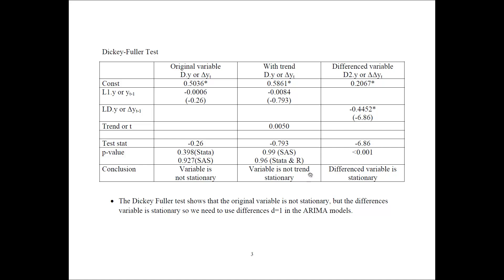Now we can look at the difference variable — this is delta delta Y_t, or d2 of Y, because it is differenced twice. We look at the coefficient on the lag variable; because we are dealing with the difference variable, that one also has to be differenced, so this is now delta Y_(t-1). We see a coefficient of minus 0.44, and the test statistic is minus 6.86. The p-value is very small — therefore we have the difference variable stationary. When we have significance, this is when we have done enough differencing and the variable is stationary.